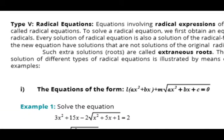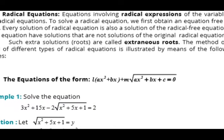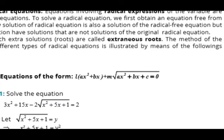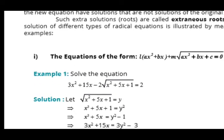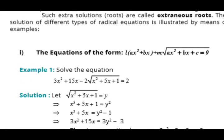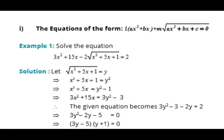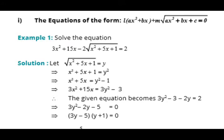The method of solution of different types of radical equations is illustrated by the following examples. The first type has the form ax² + bx + m under a radical sign equal to zero. In Example 1, we let the radical value equal to y, then squaring both sides, we move plus 1 to the right-hand side so it becomes minus 1, and then multiply by 3.